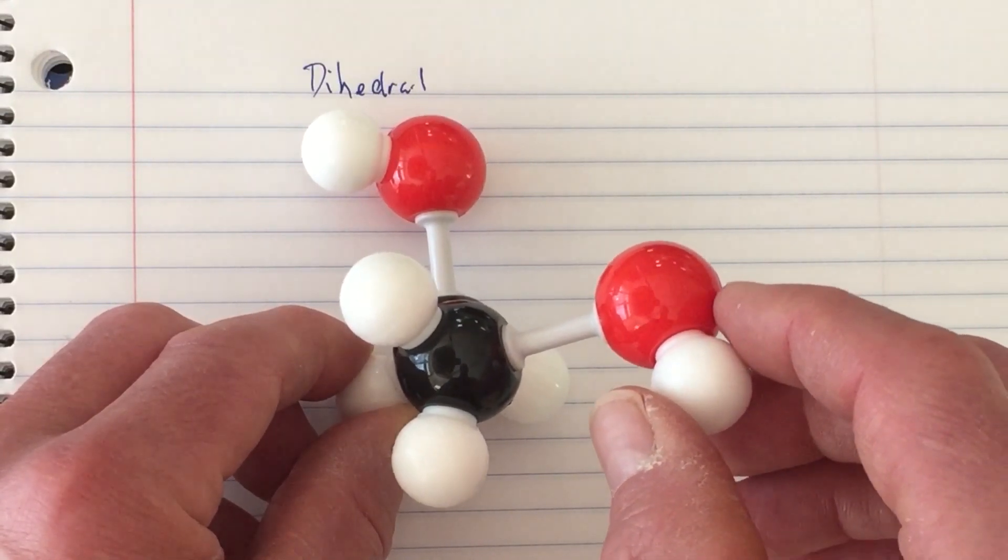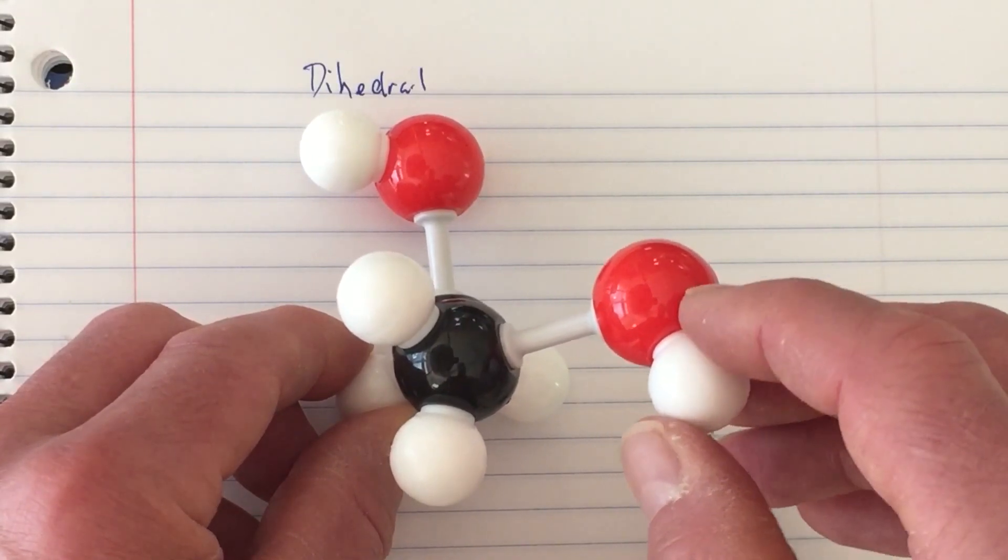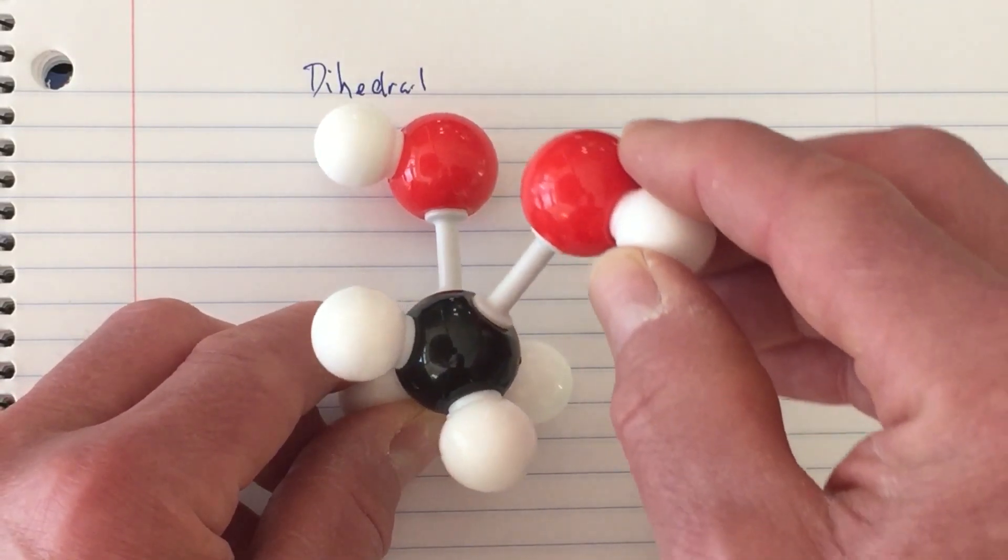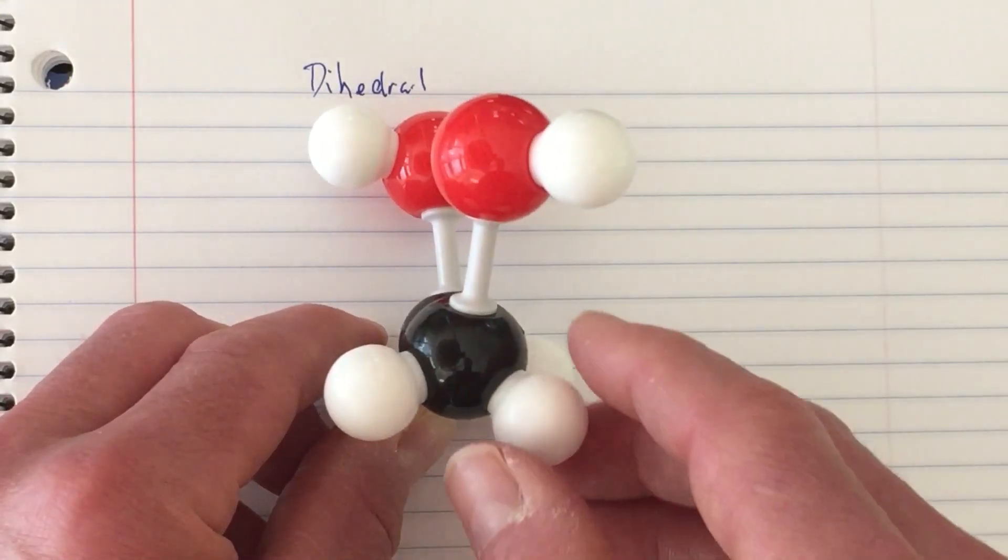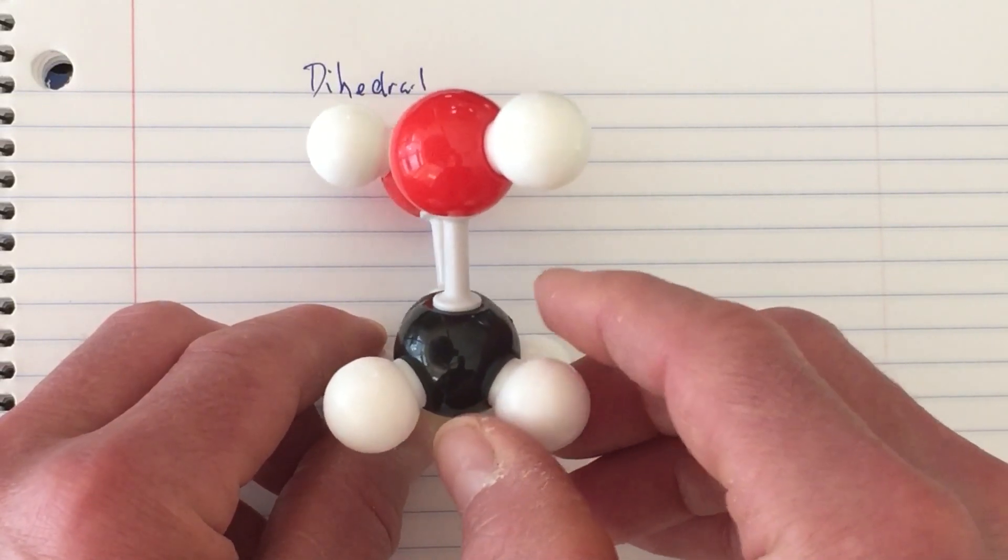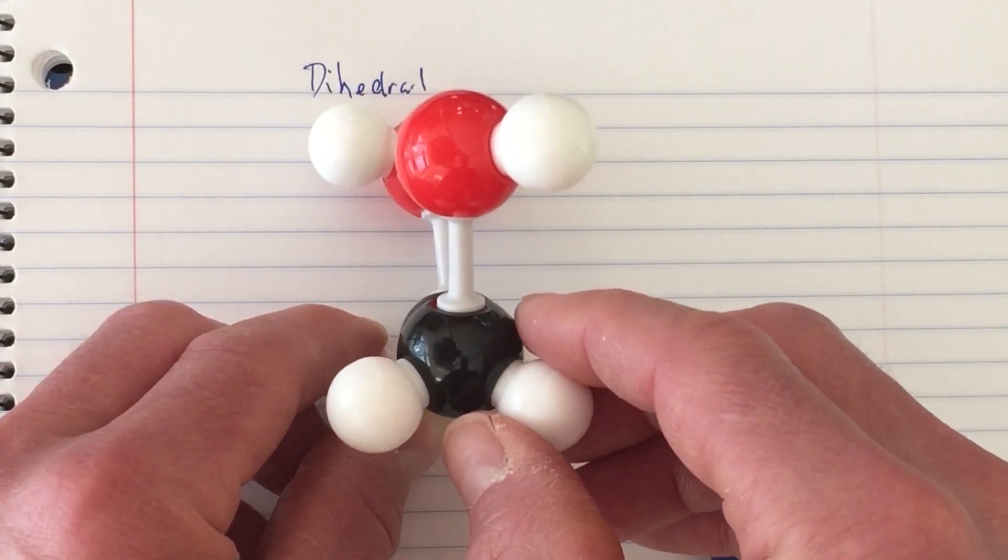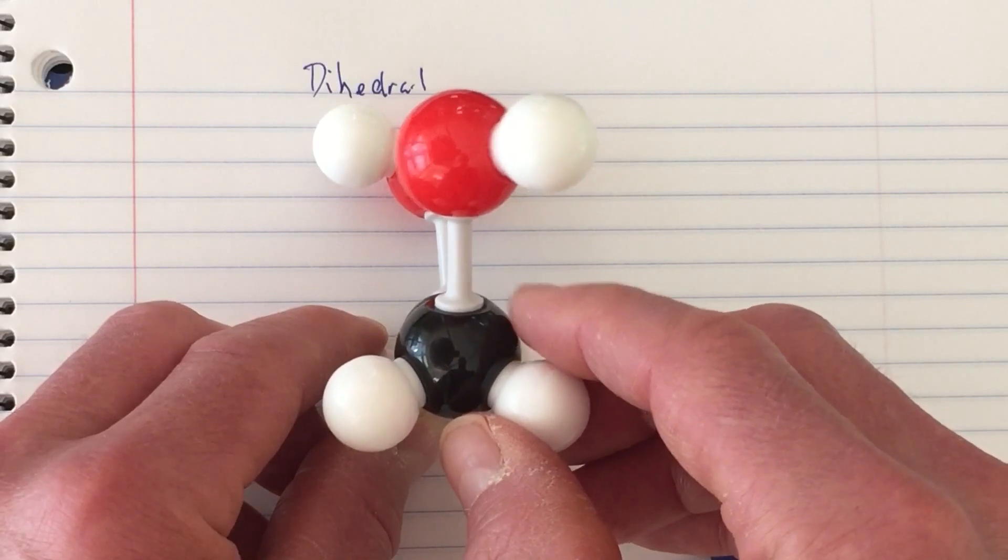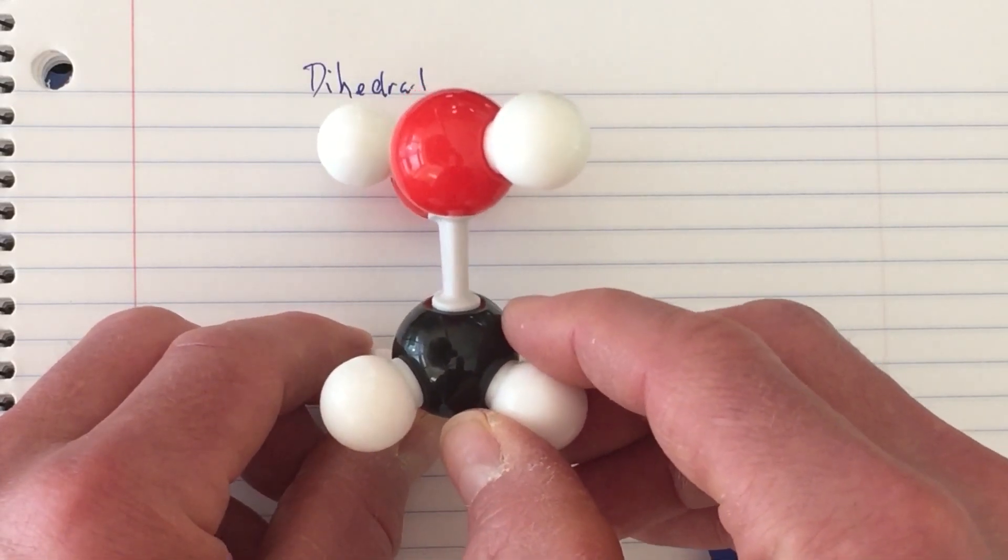Approximately negative 60 degrees. This is relatively favored because the two groups don't collide. A dihedral angle of zero in this situation puts the two hydroxyl groups in eclipsed conformation, and we know from general chemistry that's a high energy state, or relatively unfavorable.